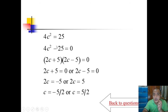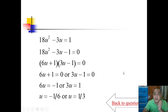And here you can use difference of two squares: (2c+5)(2c-5), so -5/2 and positive 5/2. This one uses trial and error method: (6u+1)(3u-1), so that 6u... negative 6 plus 3u is negative 3u. So the answer is -1/6 and 1/3.